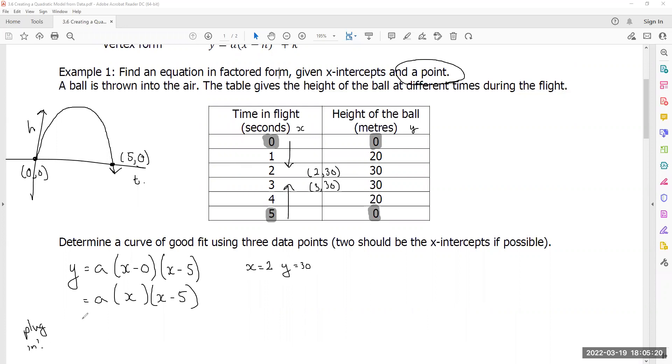Plug in. Y is equal to 30 when x is equal to 2. So all my x's are written as 2. So a times 2 times negative 3. I'm running out of space. You probably still have space. 30 is equal to 2 times negative 3, negative 6 times a. How do I get a all alone? Divide both sides by negative 6 and you have yourself minus 5. Therefore, for this data set, I am going to say an equation that fits this data pretty well is going to take the shape of negative 5x(x - 5). Done.